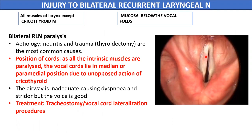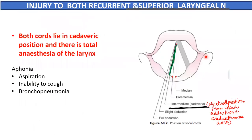If both the recurrent laryngeal nerve and the superior laryngeal nerve are injured together, the vocal cords will assume the cadaveric position. This cadaveric position is the neutral position from which abduction or adduction movements start.